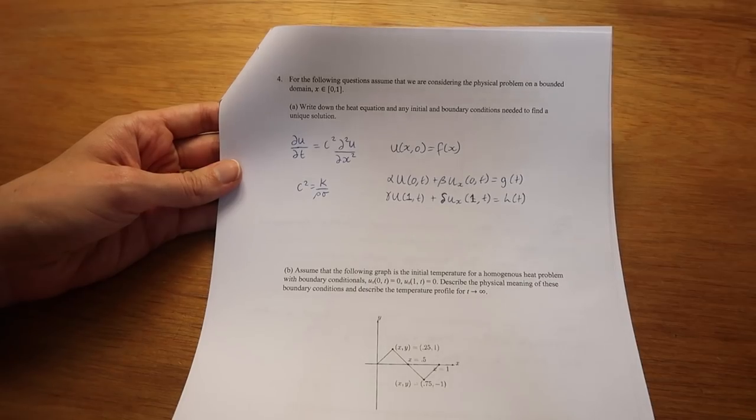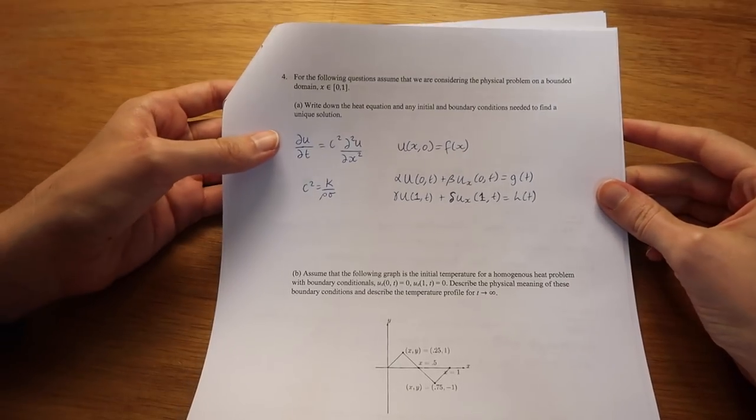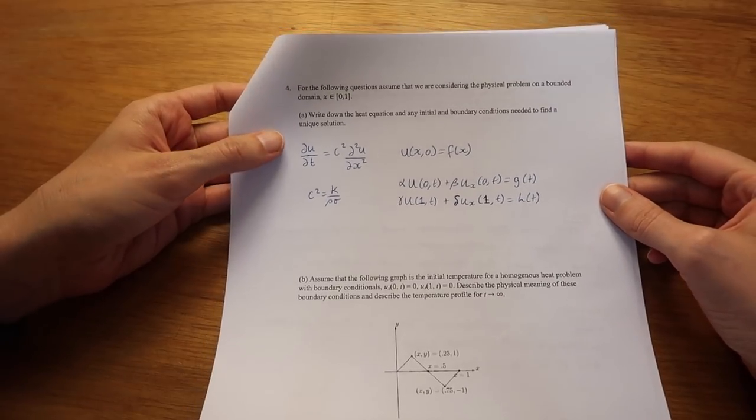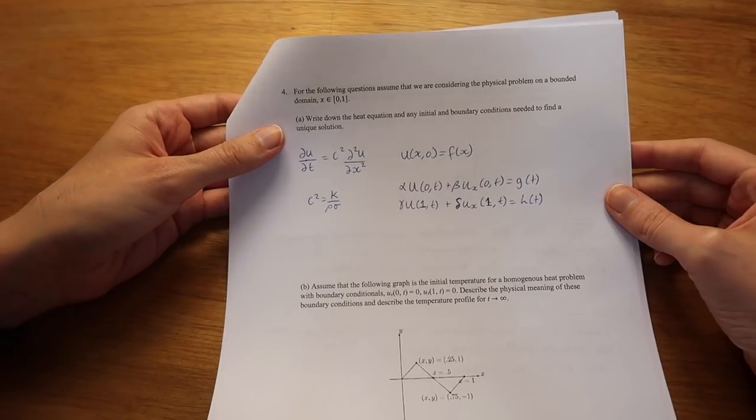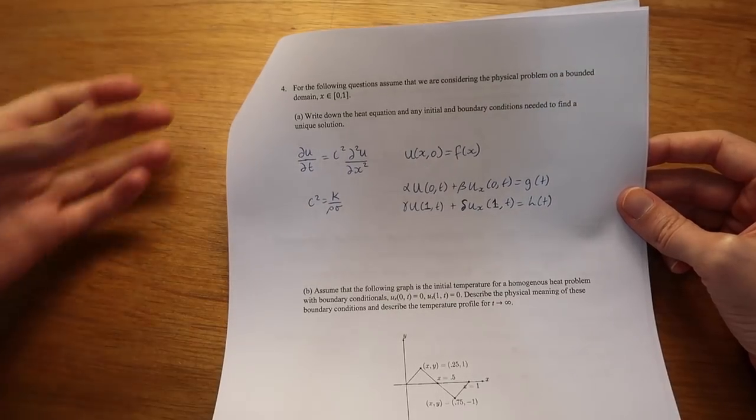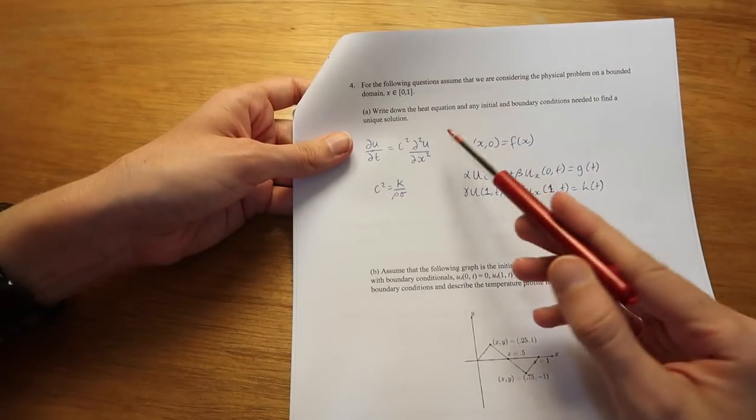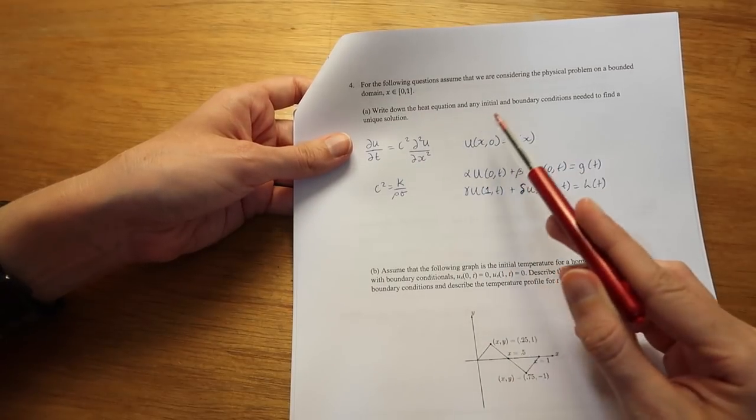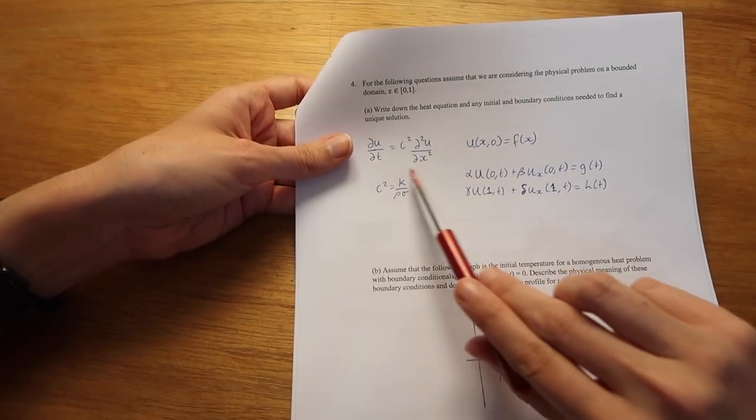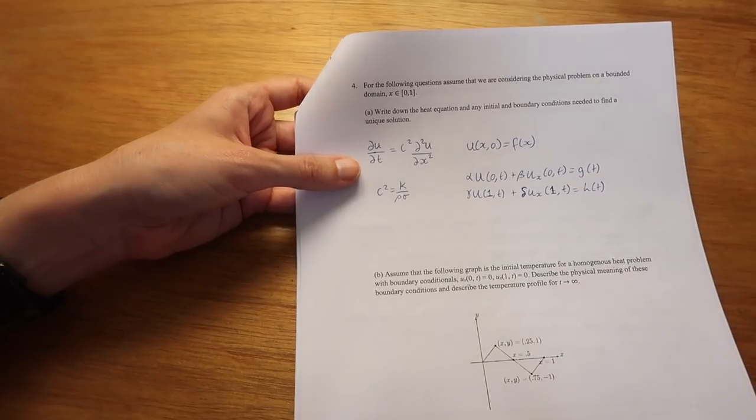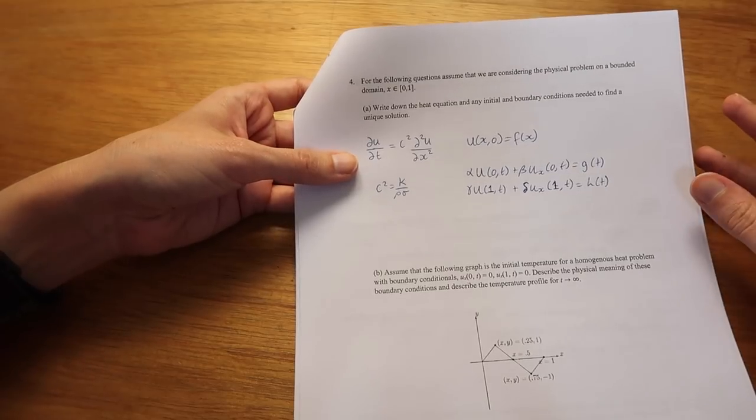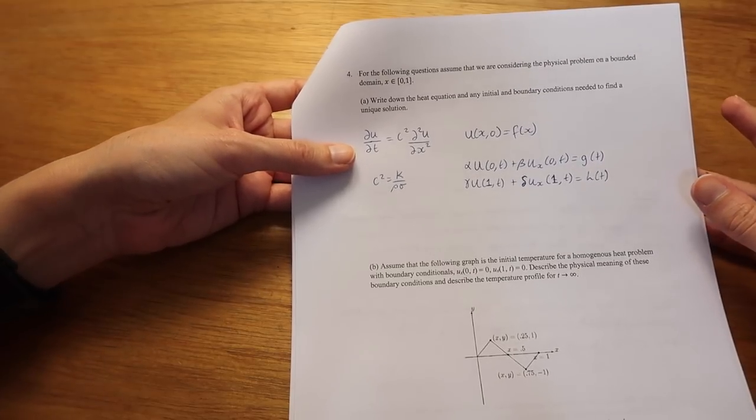We're moving now into the differential equations part of the exam and we're dealing here with partial differential equations often abbreviated to PDEs. So these partial differential equations involve an unknown multivariable function and its partial derivatives. We're asked here to write down the heat equation and any initial and boundary conditions needed to find a unique solution. This here is the heat equation and it pretty much tells you about the distribution of heat and space over time. Again very useful in a lot of engineering applications.